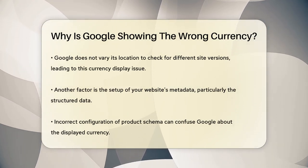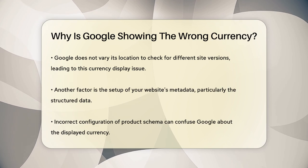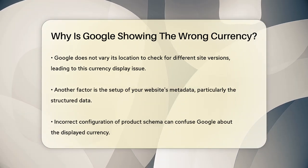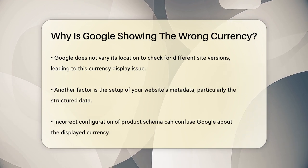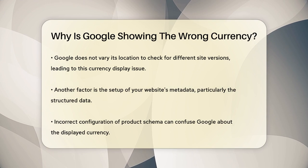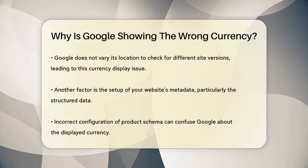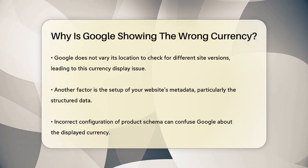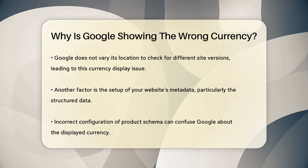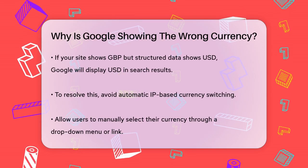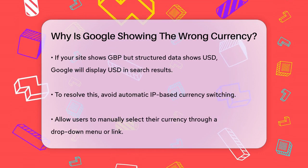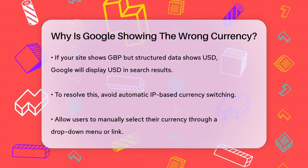This is because Google doesn't attempt to vary the location to detect site variations, so it sticks with what it sees from its US-based crawls. Another issue could be with how your website's metadata is set up. If the structured data on your site, such as the product schema, is not correctly configured, Google might get confused about the currency. For instance, if the price is displayed in GBP on your site but the structured data shows USD, Google will display the USD price in search results.